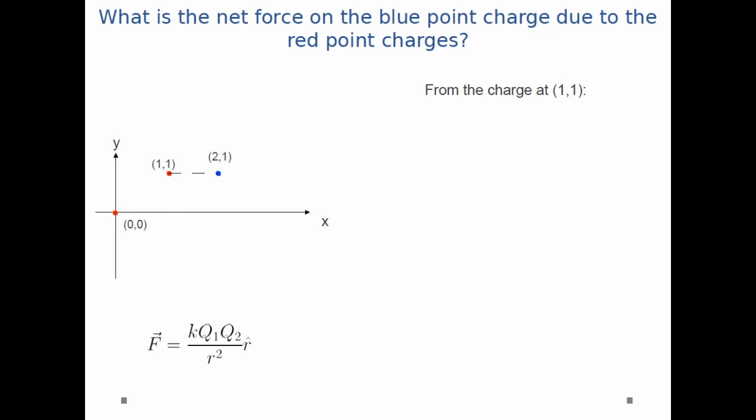So now we can do this exact same procedure, only with the point charge at (1,1). So once again I start forces k, q red, q blue, divided by the distance squared. And you can see I just found the distance between those two points squared.